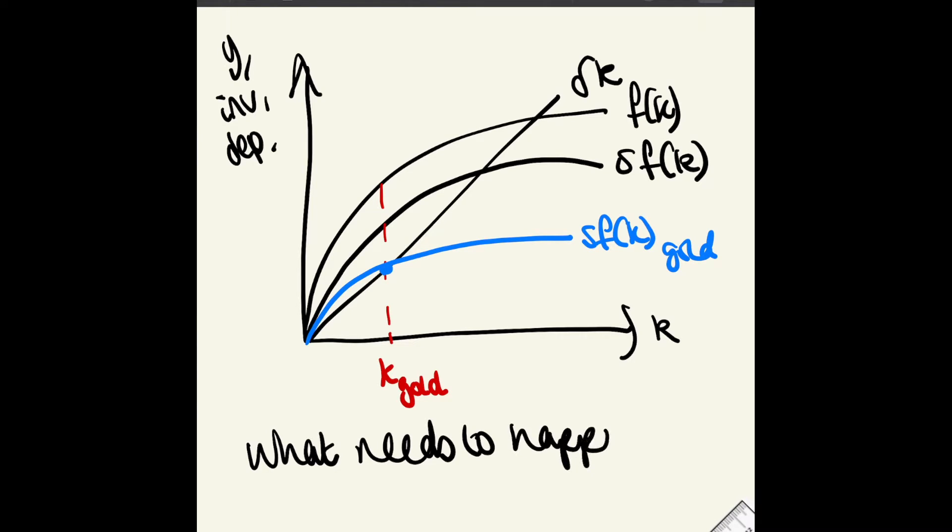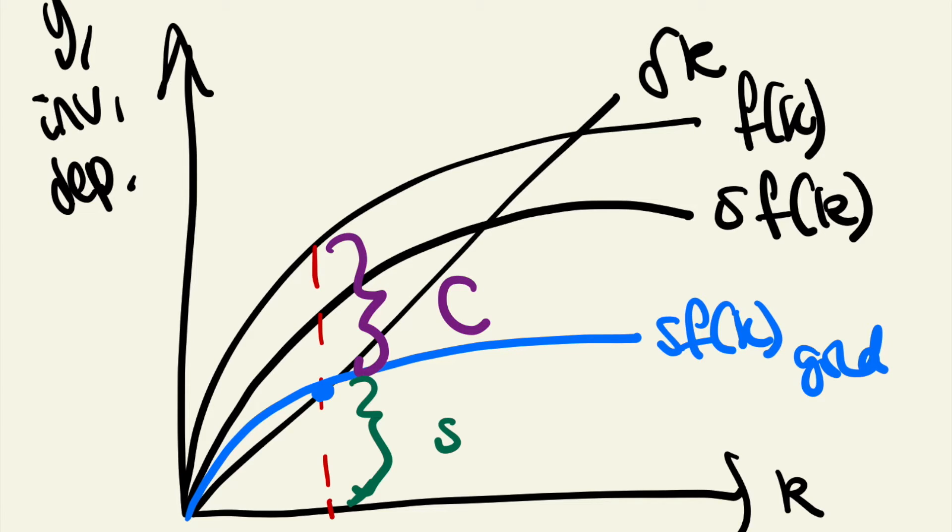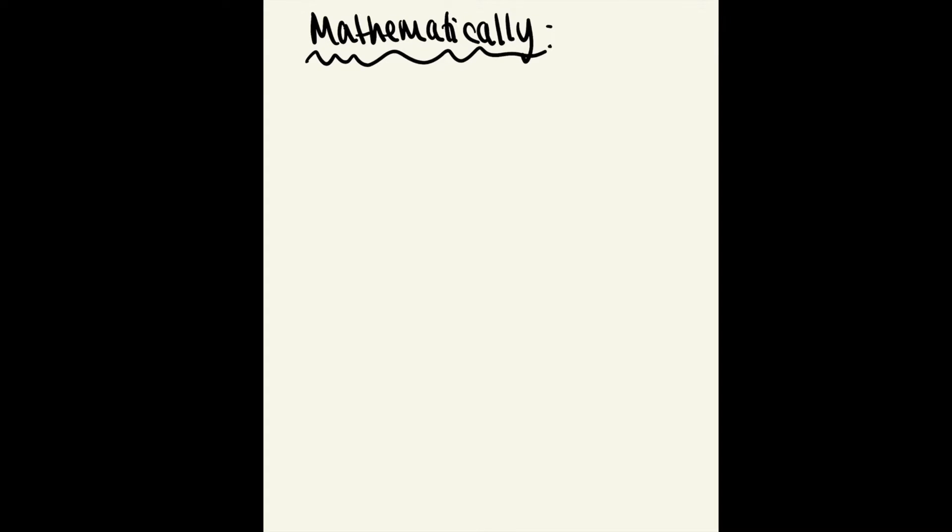We want sf(k) to pivot downwards, shrinking in the y-axis, and you do that by having s fall. If you're going up you want s to rise, but to go down you want s to fall. So we need to lower the savings rate to achieve the golden rule. I'm adding more information to the diagram to show what consumption and savings are.